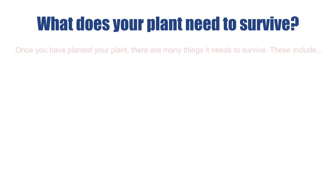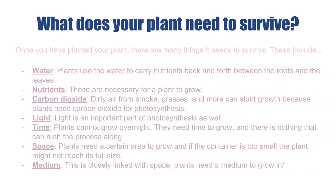Once you have planted your plant, there are many things it needs to survive. These include water — plants use water to carry nutrients back and forth between the roots and the leaves — nutrients, which are necessary for a plant to grow, carbon dioxide, as dirty air from smoke, gases, and more can stunt growth because plants need carbon dioxide for photosynthesis, light, which is also an important part of photosynthesis, time — plants cannot grow overnight and need time to grow — and space, as plants need a certain area to grow and if the container is too small, the plant might not reach its full size.